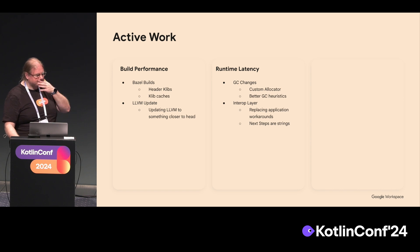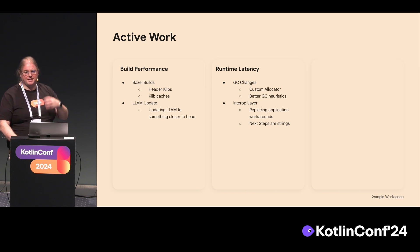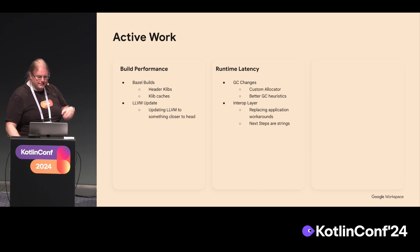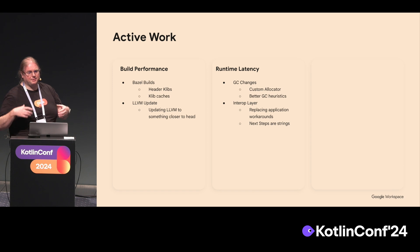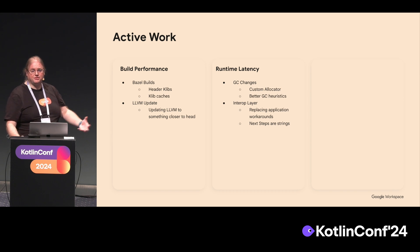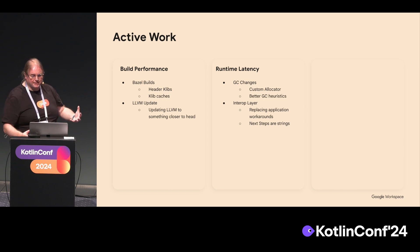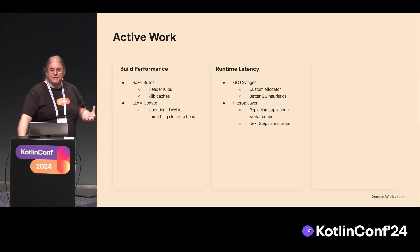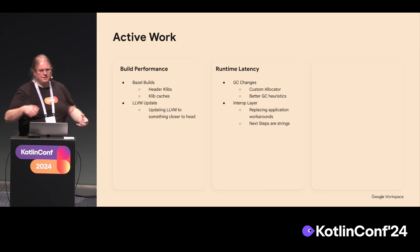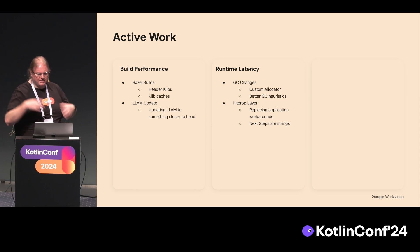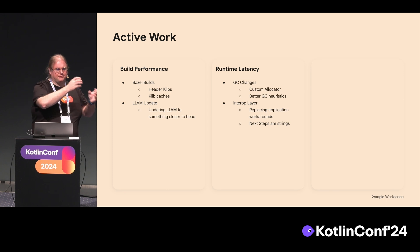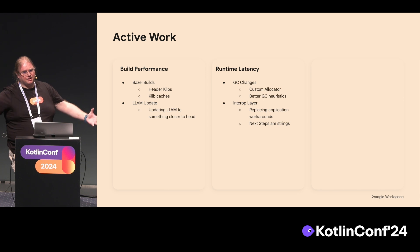For runtime latency, the Kotlin compiler team started working on GC changes in Kotlin native for us because they knew, even before we were giving them statistics, that it would be critically important. As they changed some GC heuristics and we began seeing our latency numbers, we found places where they needed to gather more heuristics. They're in the process of making those changes now while we've got workarounds in place. In the interop layer, we found performance issues around strings in particular, and we've worked around them for our current release, but we're designing long-term changes to the interop layer.